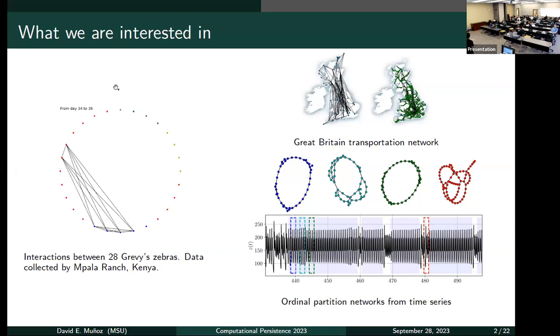On the right, we have the two examples that we studied in the paper. The first one is a transportation network in Great Britain, and the second one is using ordinal partition networks from time series. I will define that later.